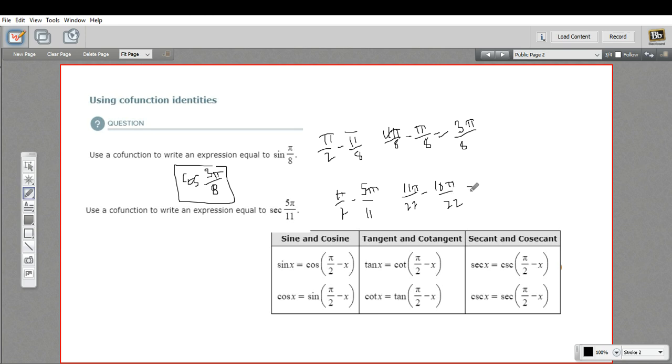Aha. So we're getting 1 pi over 22 as our answer here. So the secant of 5 pi over 11 is the same as the co-secant of pi over 22. So that is how to express one trig function in terms of a co-function.